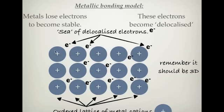Remember, this should be in 3D — if you have a block of these, what you have is a nice 3D lattice of cations, and then you have these delocalized electrons swimming around in between them. So that's the bonding model of metals: each metal atom has lost either one, two, or three electrons, and those electrons are delocalized, swimming around in this sea. We have an ordered lattice of metal cations and a sea of delocalized electrons.